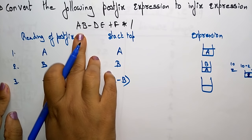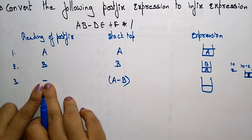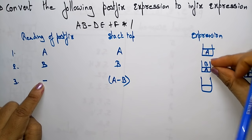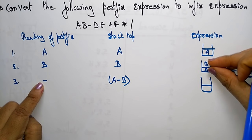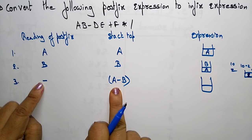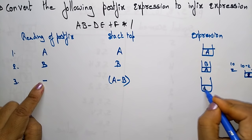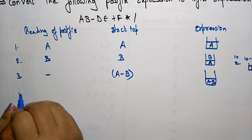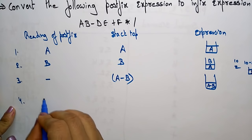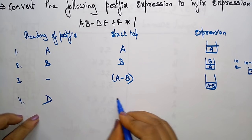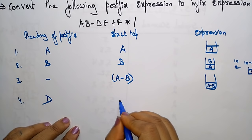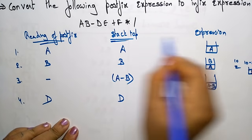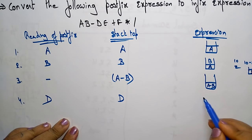But here the operands are alphabets. So whenever minus is encountered, pop the top two elements, perform A minus B, and place that on the top of the stack. Next, we read D from the postfix expression and place D on the stack top.